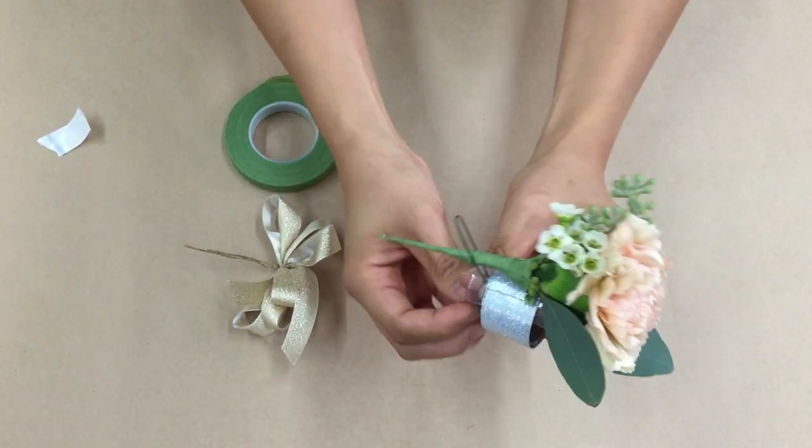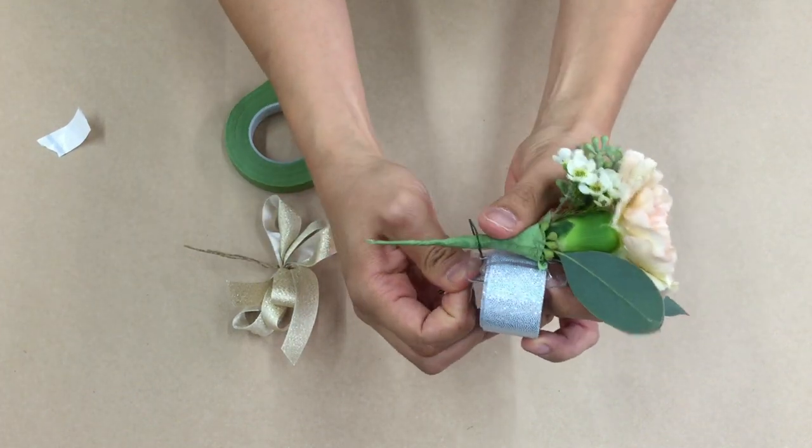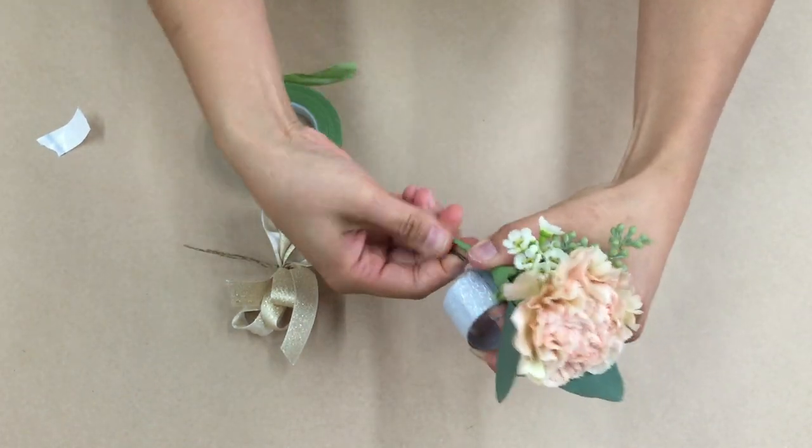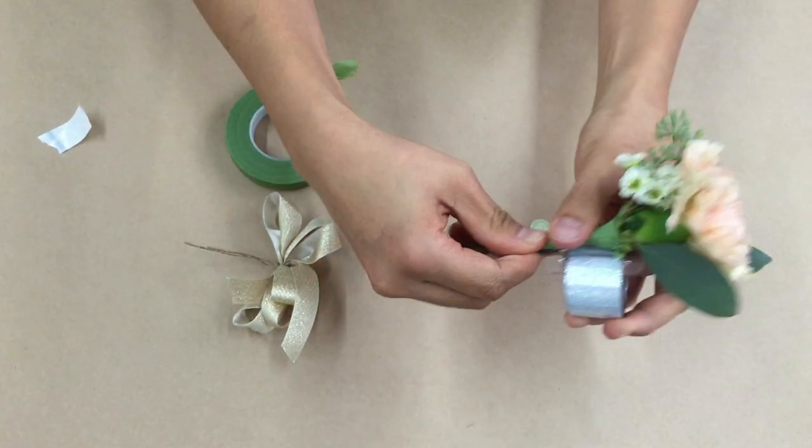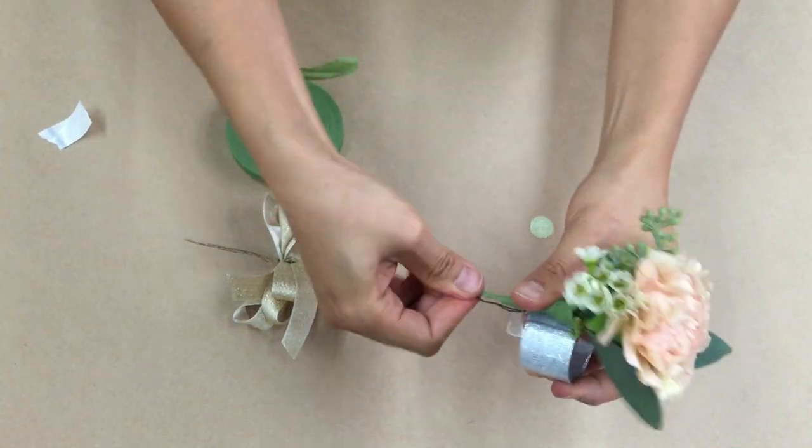You want that so it's not flinging around your wrist as you're dancing and doing whatever you're doing during your wedding. Pull the wire through and just grab it at the end.